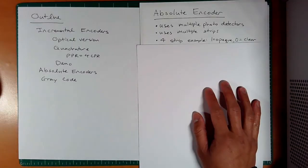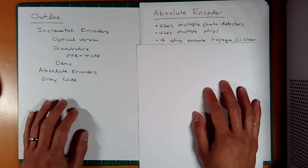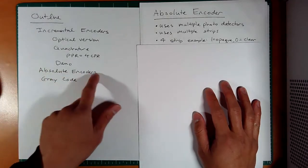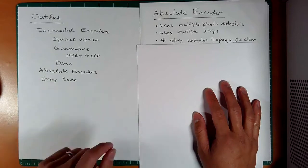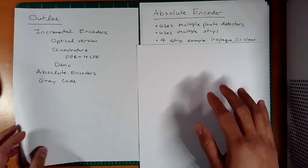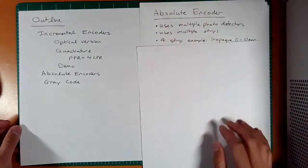Hi, this is ET370, Lecture 14, Part B, and here we're going to talk about absolute encoders and gray code. And gray code is actually paired with absolute encoders and pairs nicely, and you'll see why.